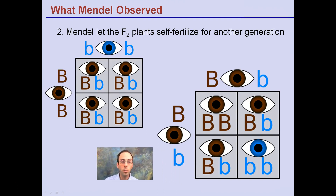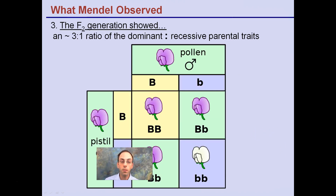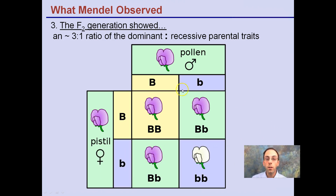Another concept we observe is Punnett squares. Seeing two big B's and two little b's, we're seeing heterozygous individuals with all brown eyes. If we take two individuals from those resulting offspring and breed them together, we see 75% brown eyes and 25% blue eyes. This is our pollen — the male — and this is our pistil from the female, and we're noting the resulting genotype and also phenotype.